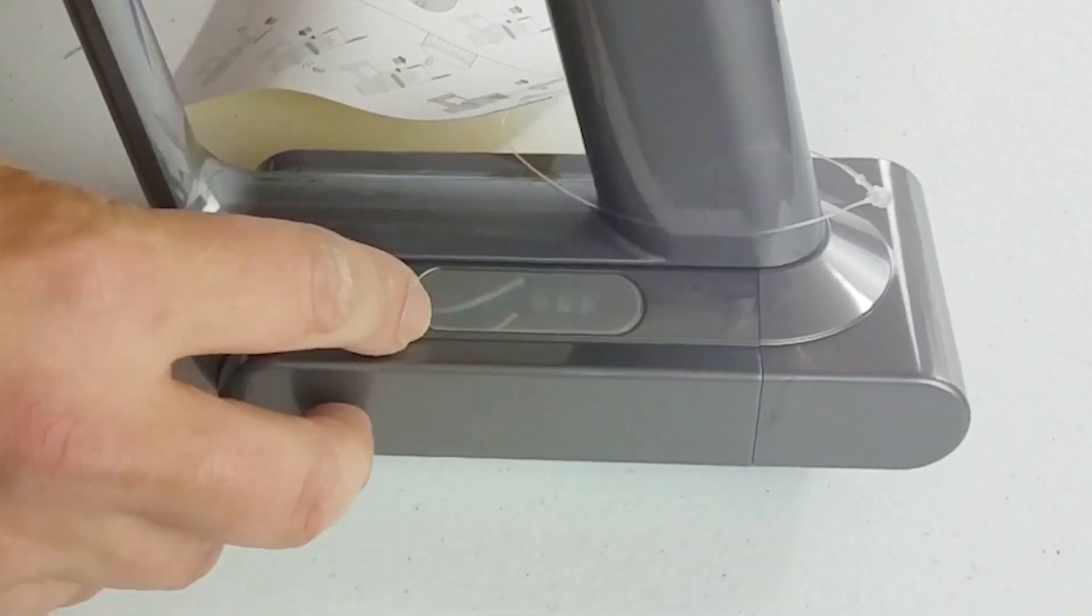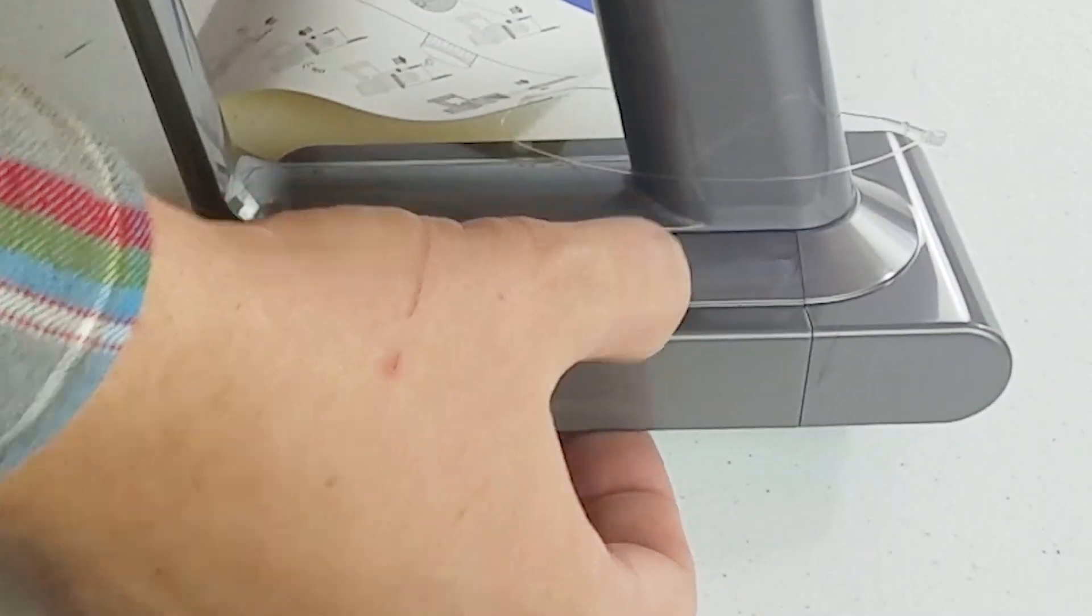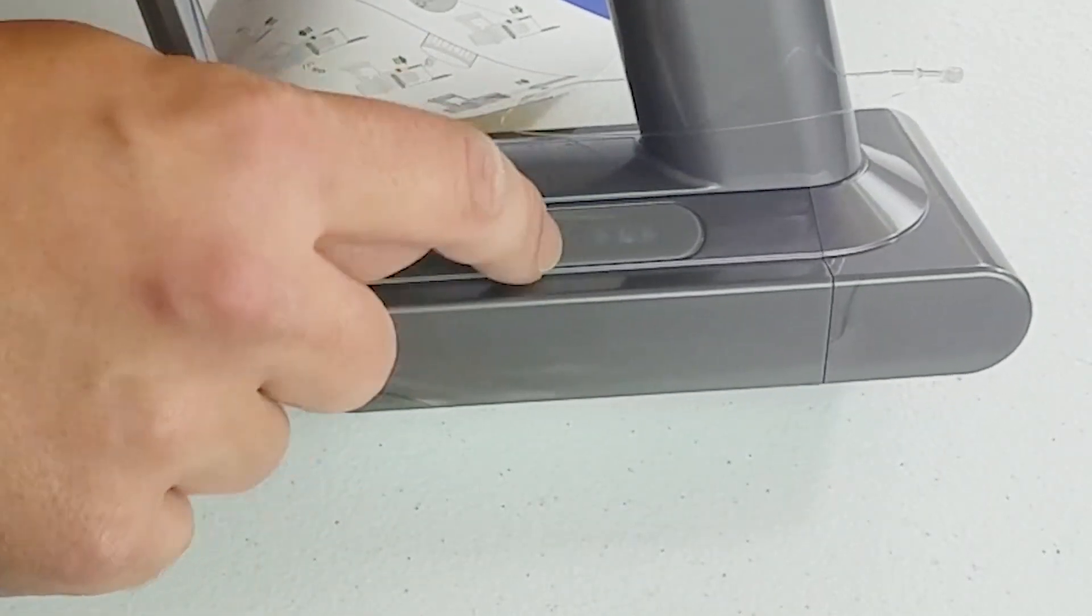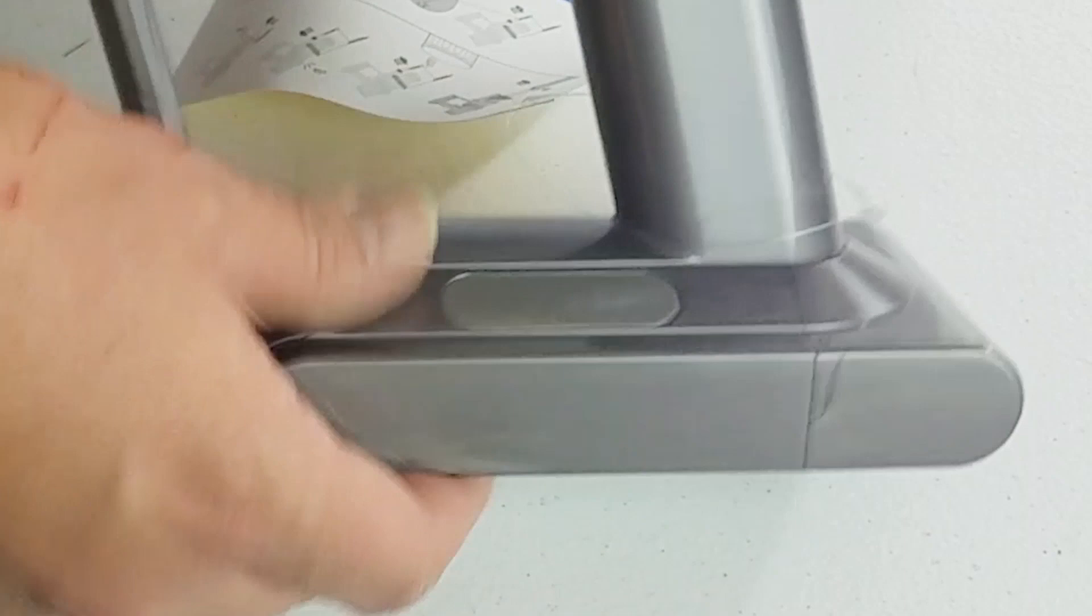Another thing here, you have indicator lights. This is going to be your battery life indicator light and this is a light that indicates whether or not there's a clog somewhere.